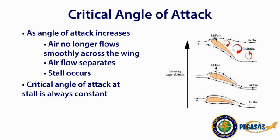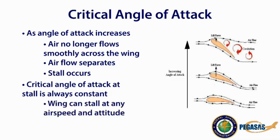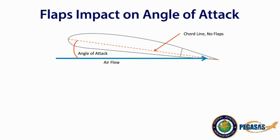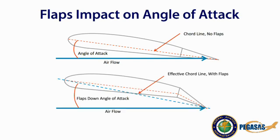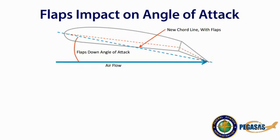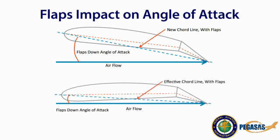The critical angle of attack, or the angle at which the stall occurs, is always constant for a given airfoil in a given configuration. Since the stalling point is only affected by the angle of attack, it is important to note that the wing can stall at any airspeed and any attitude. When the flaps are extended, it changes the effective chord of the wing, which increases the angle of attack and results in a momentary increase in lift. The pilot will normally adjust elevator pressure to dissipate this momentary increase in lift to maintain altitude. The result is that an aircraft with deployed flaps can produce the same lift at a lower angle of attack until the descent profile is initiated.